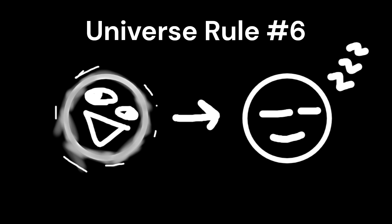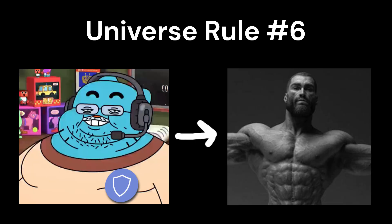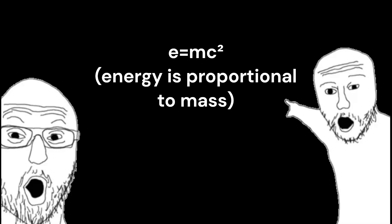It's because all systems want to enter their lowest energy state. At the quantum level, this means particles want to enter their lowest mass state, since mass and energy are related by Einstein's E=mc².